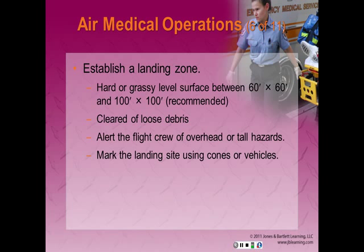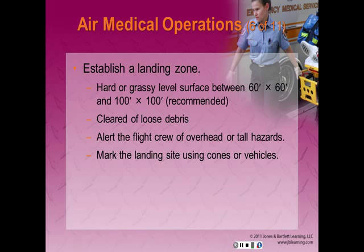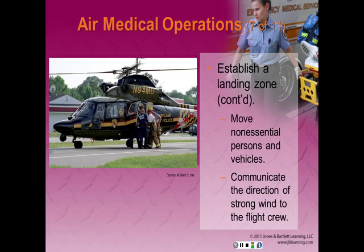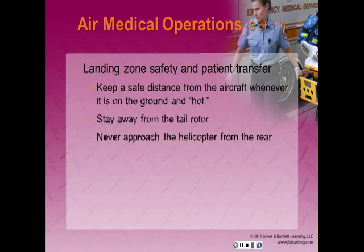Establishing a landing zone: the safest landing and takeoff is at a slight angle. Establishment of the LZ is the responsibility of the ground EMS crew or fire department. An appropriate site should be a hard or grassy level surface between 60x60 and 100x100 feet — 100 by 100 is recommended. Clear the area of loose debris like branches, trash bins, flares, accident tape, and medical equipment. Alert the flight crew to overhead hazards like power lines, telephone cables, antennas, or trees. Mark the landing site using weighted cones or emergency vehicles at the corners with headlights facing inward to form an X. Move all non-essential personnel and vehicles to a safe distance. Communicate strong wind direction to the flight crew — a bed sheet secured to a tree can help indicate wind direction, but never use tape.